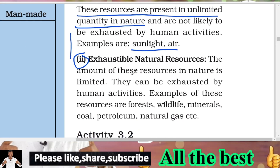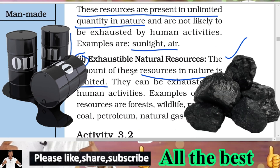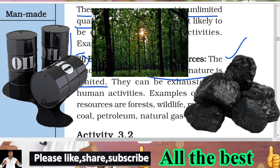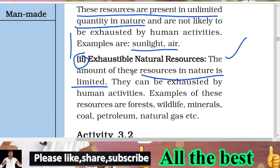Second category: exhaustible resources. The amount of these resources in nature is limited. They are not unlimited resources — they are limited natural resources. The more we use them, the more they get exhausted. Examples include petrol, diesel, petroleum, coal, minerals, wildlife, forests, and natural gas — these are exhaustible resources.